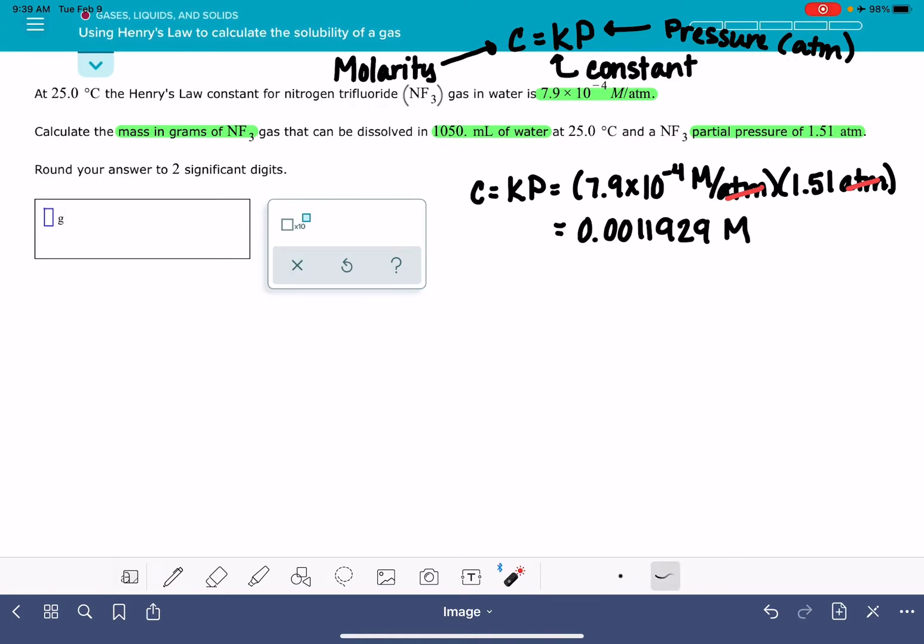So what are we going to do now? This is not what the problem wants us to answer. The problem wants us to calculate the mass in grams of NF3. Can we convert molarity into mass? Let's remember that molarity is a type of conversion factor. Molarity gives us the relationship between the moles of our solute and a volume of the solution. When our molarity is 0.0011929, that means that we have 0.0011929 moles in every liter of solution. For this particular solution, we're talking about moles of NF3. That's our solute.